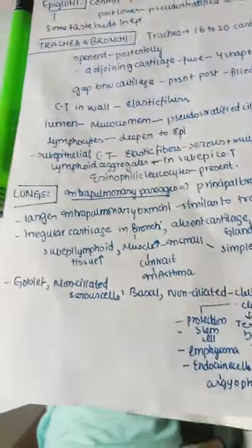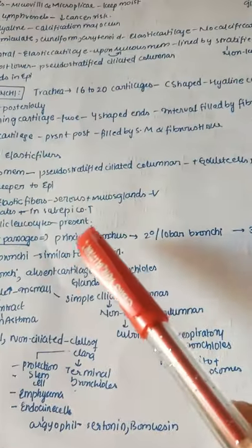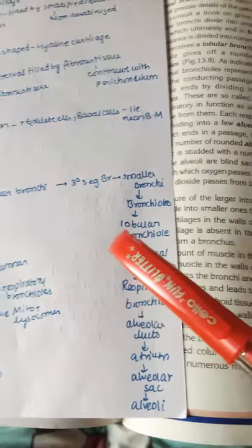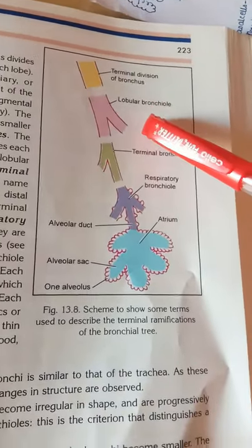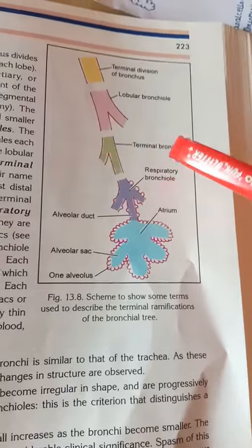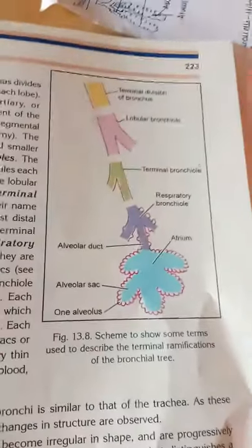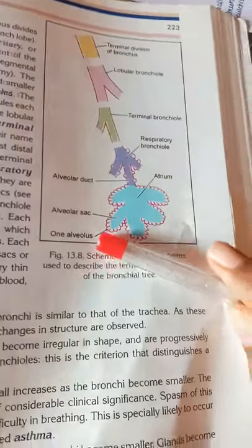There are intrapulmonary passages. The principal bronchus first divides into secondary or lobar bronchi, then into tertiary segmental branches, then into smaller bronchi, into bronchioles, lobular bronchioles, terminal bronchioles, respiratory bronchioles, alveolar ducts, atrium, alveolar sacs, and finally each individual alveolus.